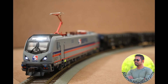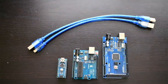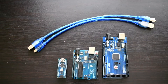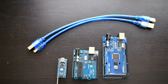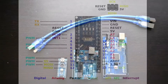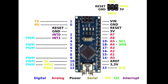First, we'll see what types of microcontrollers we have. Broadly, we have three types of Arduino microcontrollers. The first is the Arduino Nano, which has 8MB of memory.